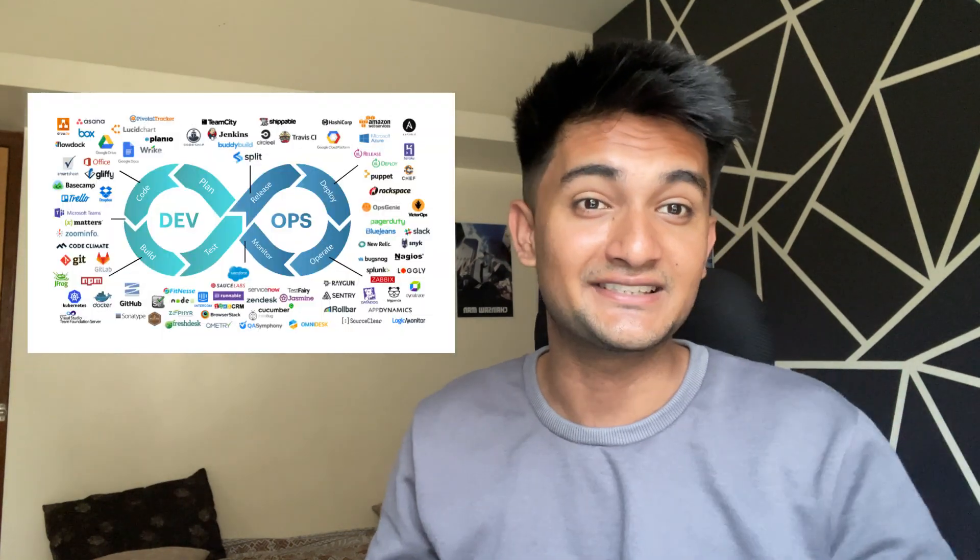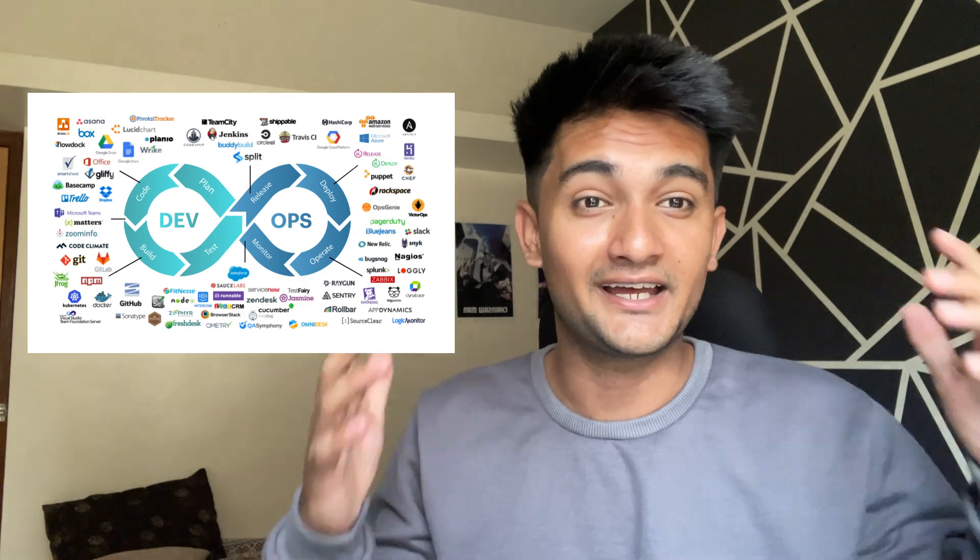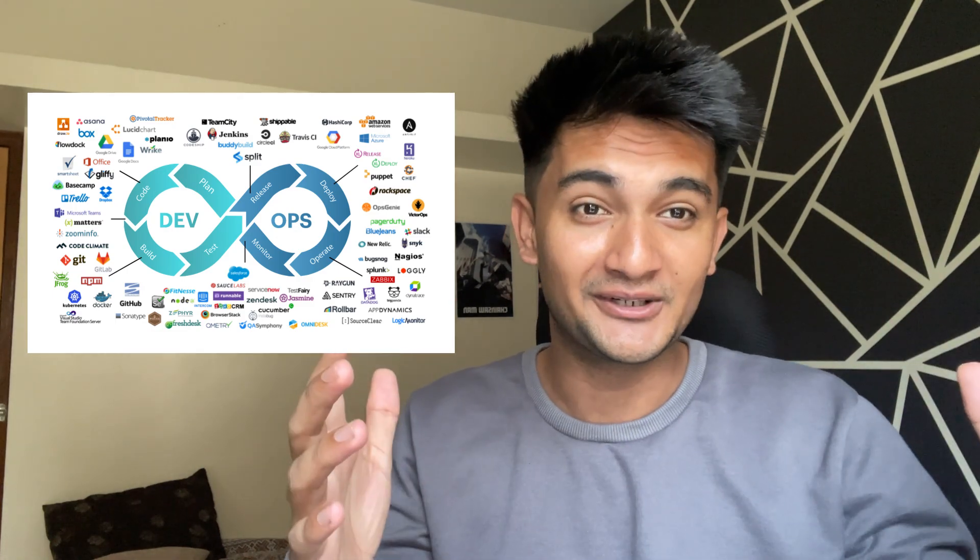Not to mention the different DevOps tools like Terraform, Ansible, Kubernetes, Jenkins, GitHub, GitLab, Prometheus, Grafana, and so much more. So in this video, I'm going to explain all these different terms with a real world example to make you understand where to use all these different tools in the deployment process. This video is going to be very helpful for you so watch it till the end.